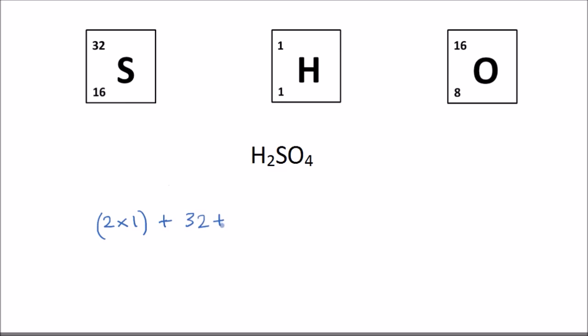plus the relative atomic mass of these four oxygens. So it's four times 16. And that gives us a grand total of 98. So the relative formula mass of H2SO4 is 98.